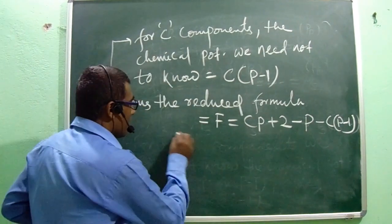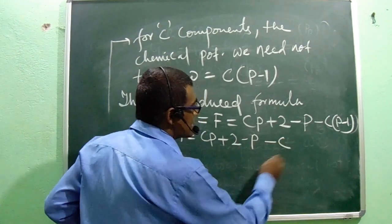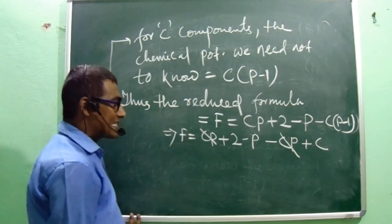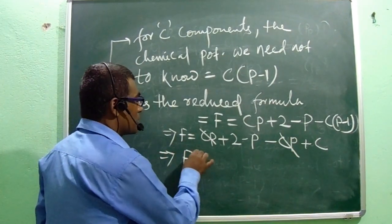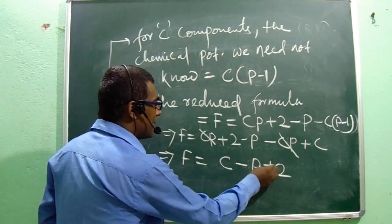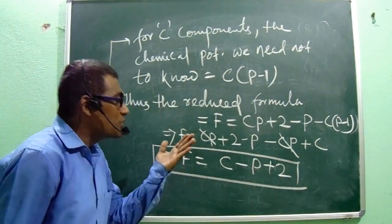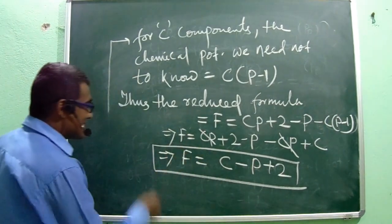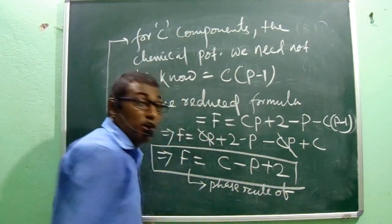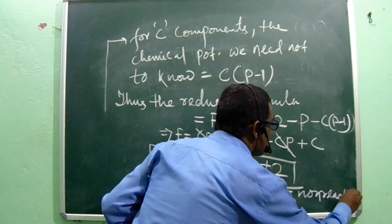Expanding: F = CP + 2 - P - CP + C. The CP terms cancel, giving F = C - P + 2. This is the required relationship — the phase rule for a non-reactive system.